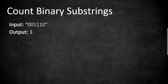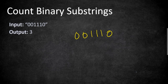Let's understand this with an example. For the input string '001110', the possible valid substrings are: '01' with equal zeros and ones grouped together, '0011' with two zeros and two ones consecutively, and '10' at the end. So the total number of valid substrings is three, which is our output.